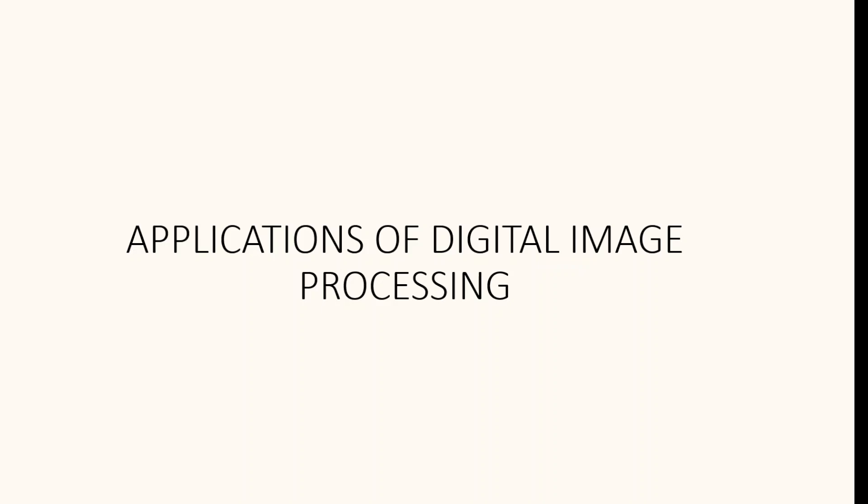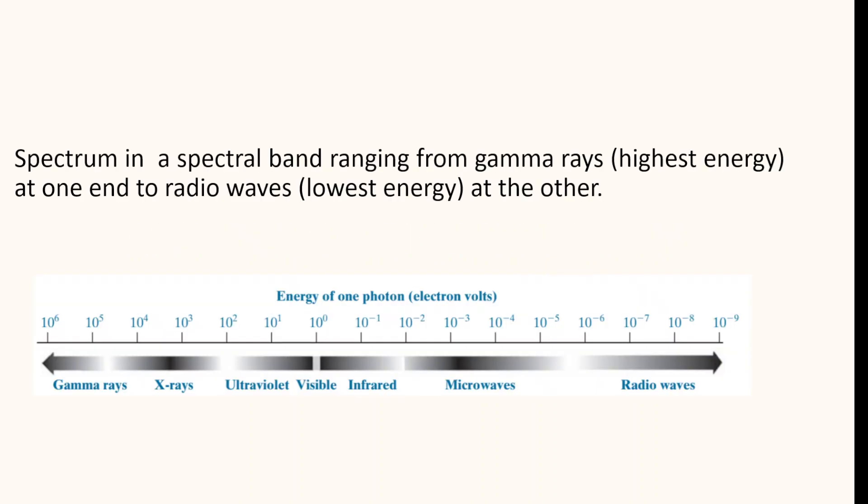In today's world, there is almost no area of technical endeavor that is not impacted in some way by digital image processing. This session covers a few of the applications of digital image processing. To understand these applications, images are categorized according to their sources. The principal energy source for images are electromagnetic bands, or the electromagnetic energy spectrum. We will discuss how images are generated in various categories and the areas where they are applied.